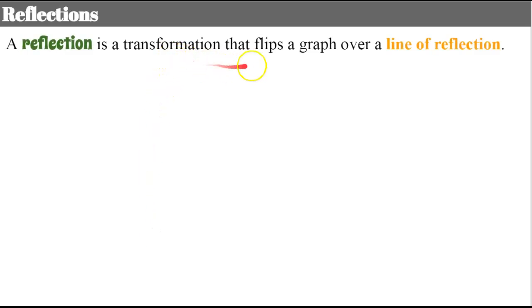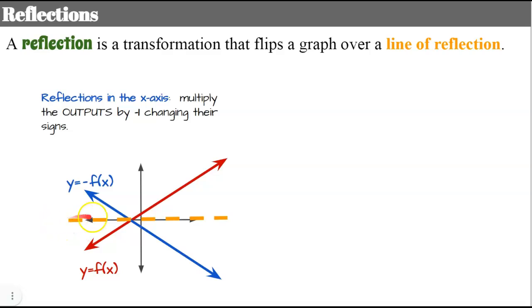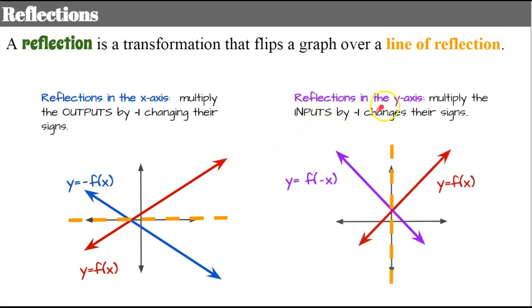Reflections are transformations that flip a graph over a line of reflection. For reflections in the x-axis, the line of reflection is the x-axis — you multiply the outputs by negative one, changing their signs. So with parent function y equals f of x, we multiply each output by negative one and reflect it over the x-axis. For reflections in the y-axis, you multiply the inputs by negative one to change their signs, reflecting over the y-axis.